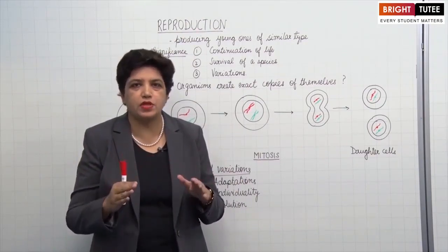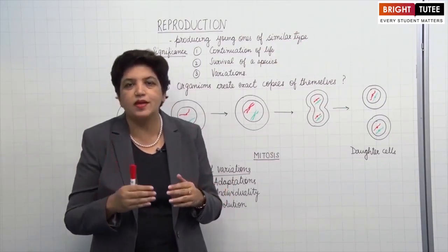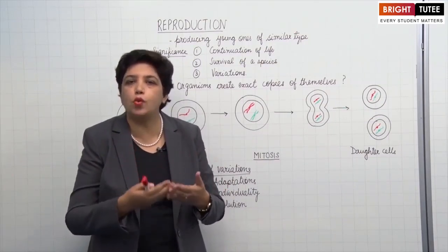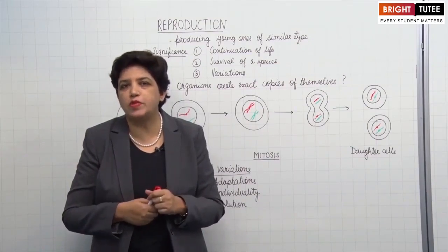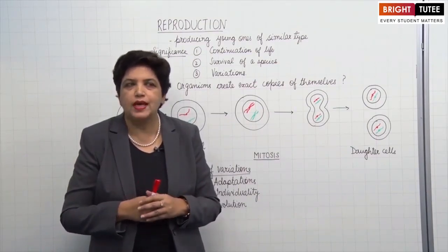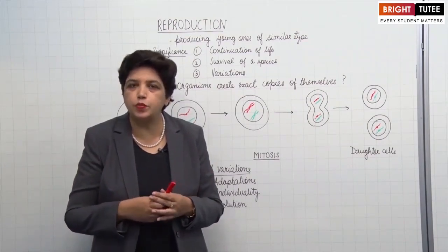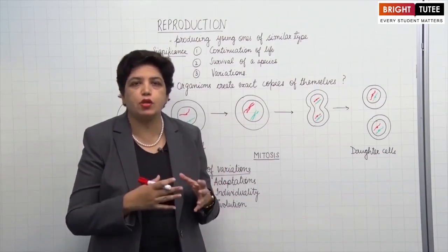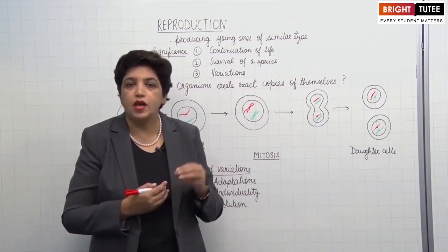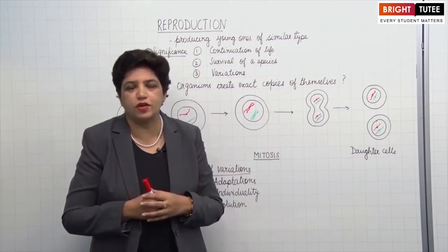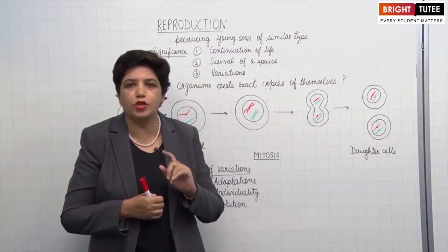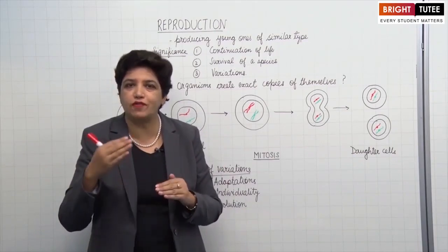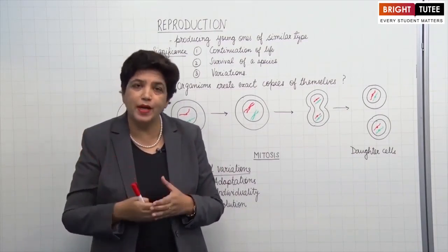All living organisms, whether unicellular or multicellular, whether plants or animals, they all undergo Reproduction to produce more of their own kind. In the last chapter, we studied about various life processes like nutrition, respiration, transportation and excretion. Those life processes were essential for the survival of a living organism — without those processes, a living organism cannot survive. But reproduction is not important for survival; an individual won't die without reproduction. It is not an important life process.